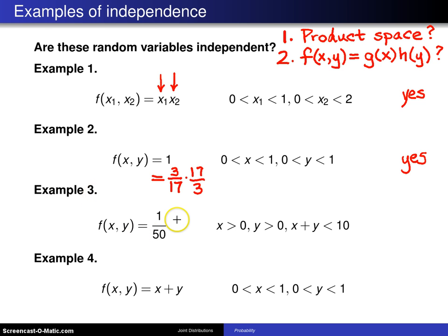Example 3: Is this a product space? When you look at this region, it's triangular, so you don't even have to go to question 2—you can immediately write no, they are not independent; they are dependent random variables.